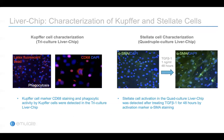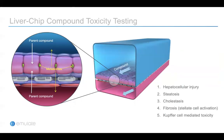Further characterization for Kupffer and stellate cells was also performed. Phagocytic activity for Kupffer cells was tested using latex bead uptake. We confirmed that these beads were engulfed by the Kupffer cells, and Kupffer marker CD68 positive staining was also confirmed from the tri-culture liver chip. For the stellate cells, the goal is keeping them in a mostly quiescent stage or low level of activation under normal conditions. When we activated them — for example, by treating with TGF-β1 for 48 hours — we could see activation compared to the untreated condition, based on the alpha-smooth muscle actin staining from the quad-culture system.